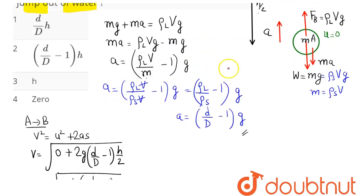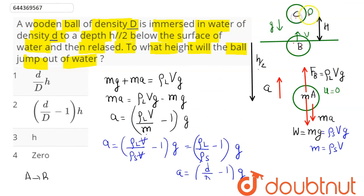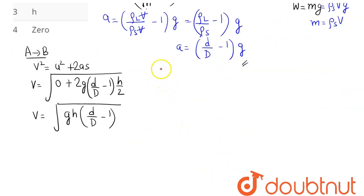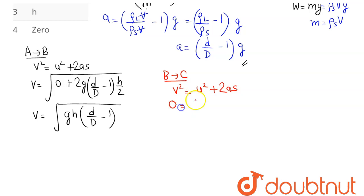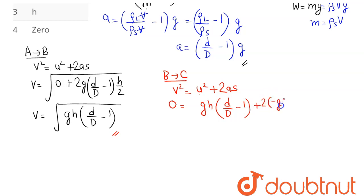Analyzing motion from point B to point C: at the highest point, velocity is 0. The maximum height jumped out of the water is capital H. Using v² = u² + 2aS, with final velocity 0, initial velocity squared = g × h × (d/D − 1), and acceleration = −g, on calculation the maximum height comes out as H = (h/2) × (d/D − 1).